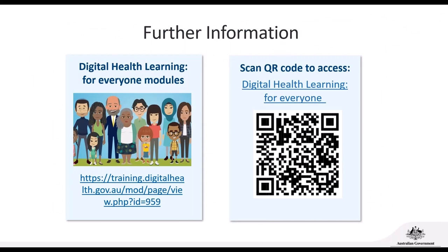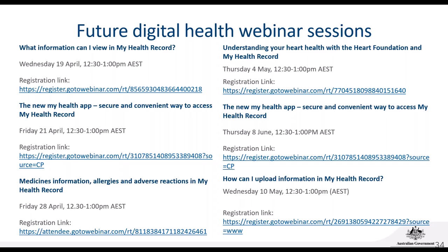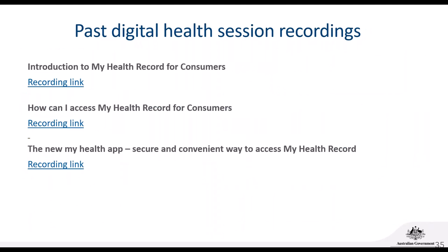If you're unsure about any of the steps covered today, it's a great idea to look at the e-learning modules on the Australian Digital Health Agency website — go to the Modules for Everyone section on the left-hand side. They have videos that step you through everything covered today, and it's a really good self-paced way of learning. You can also scan the QR code for quick access to the digital health learning. Future digital health webinar sessions can be found on the Agency's website, and a copy of today's slides will be emailed to you in the next day or so. Past recorded sessions are also available if you can't attend a future session.